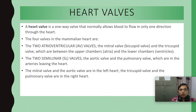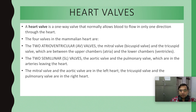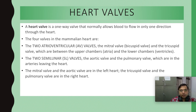In the human heart there are four valves: two atrioventricular (AV) valves and two semilunar (SL) valves. The two AV valves are between the atrium and ventricle — the mitral valve (also called bicuspid valve) on the left side and the tricuspid valve on the right side. The two semilunar valves are at the arteries leaving the heart: the aortic valve at the aorta and the pulmonary valve at the pulmonary artery.